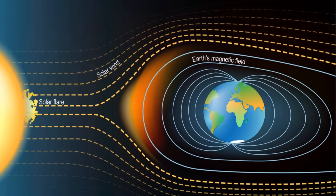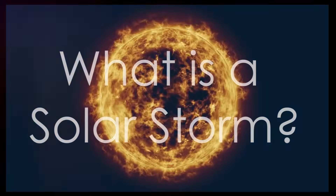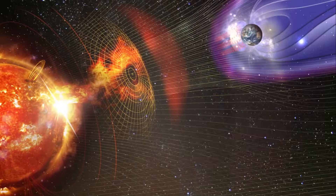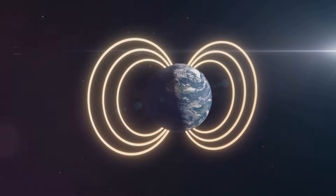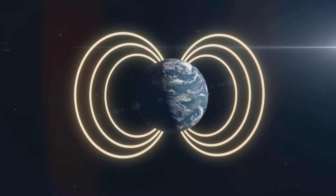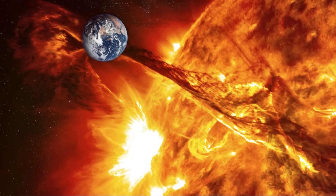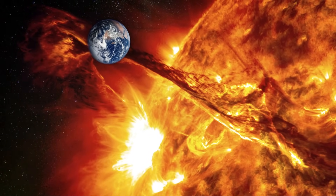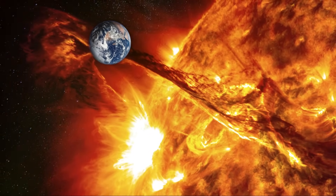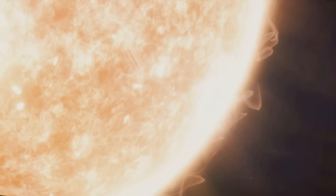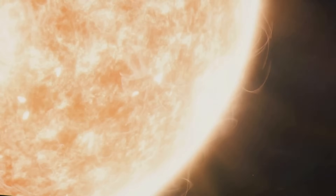A solar storm, also known as a geomagnetic storm, is a disturbance in Earth's magnetosphere caused by variations in the solar wind. These disturbances are often triggered by solar flares and coronal mass ejections, or CMEs. Solar flares are sudden bursts of energy and light, while CMEs involve the expulsion of massive amounts of solar material into space.